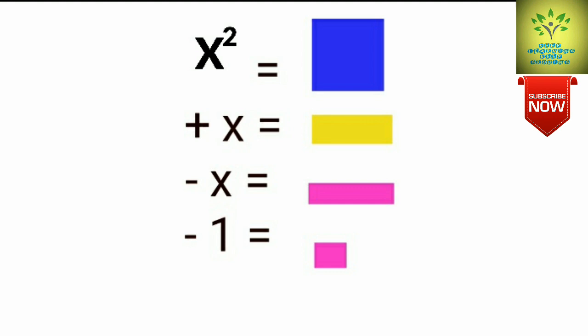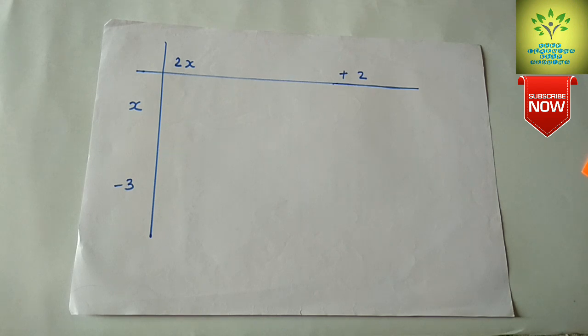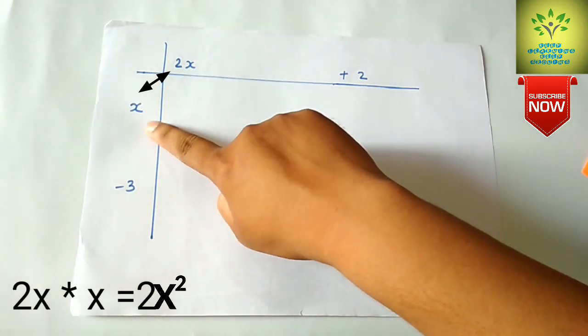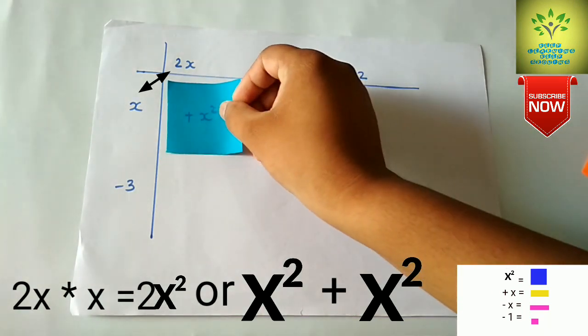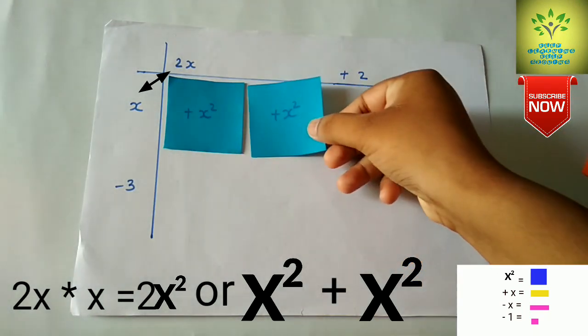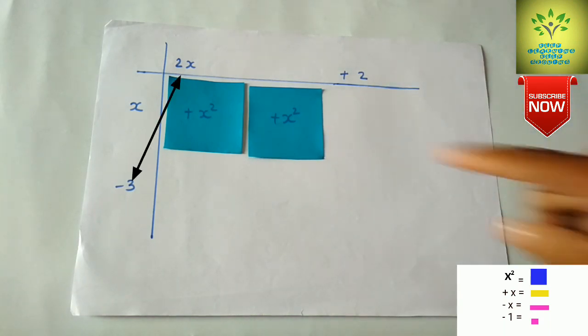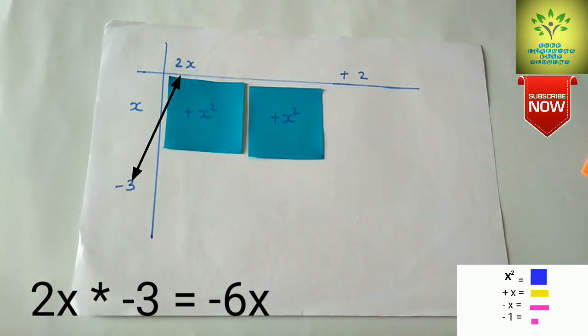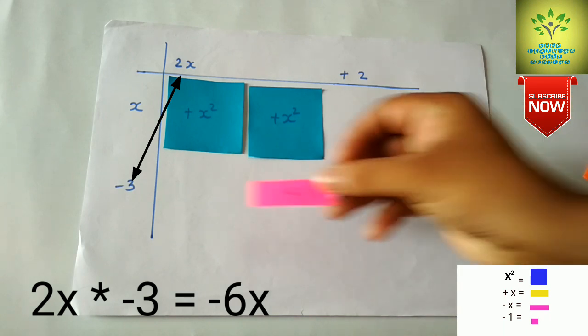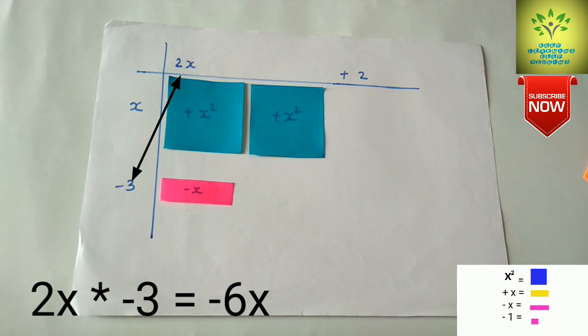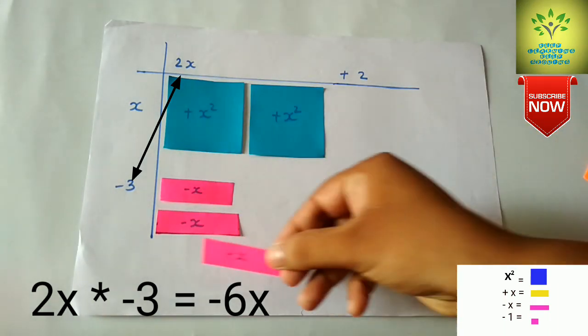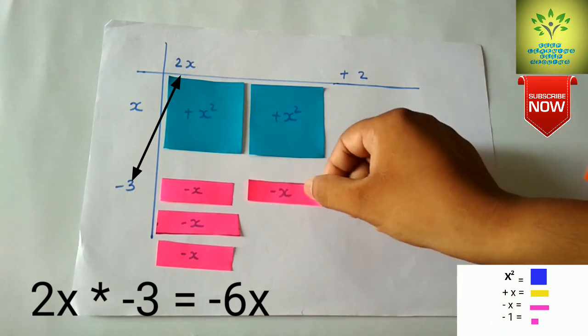For the lab activity: x squared is a blue square paper, plus x is a yellow strip, minus x is a pink strip, and minus 1 is a small pink piece. So 2x times x equals 2x squared — we place two blue square pieces. Then 2x times minus 3 equals minus 6x, so we place six pink strips, each representing minus x.